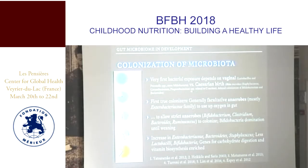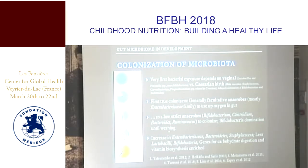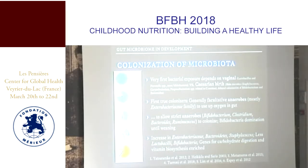The very first bacterial exposure depends on vaginal versus cesarean birth. The first true colonizers are generally facultative anaerobes, which use up oxygen in the gut to allow strict anaerobes to colonize. Then there is Bifidobacteria domination until weaning, followed by an increase in Enterobacteriaceae, Bacteroidetes, Staphylococcus, and less Lactobacillus and Bifidobacteria. Genes for carbohydrate digestion and vitamin biosynthesis are enriched. That's the general pattern from birth through one month, six months, twelve months, to two years and adult.